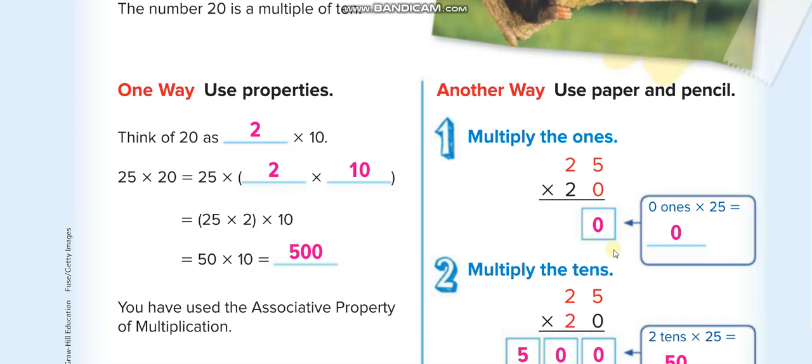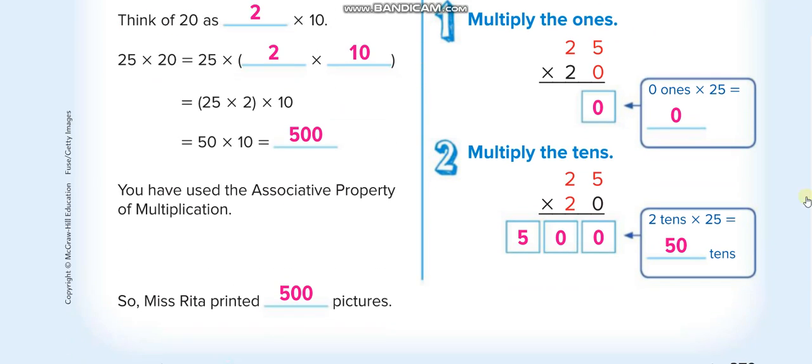The second way they are using, multiply 0 with 25, which is 0. Then multiply 2 with 25, which is 50. And add this 0 at the end, so it becomes 500.